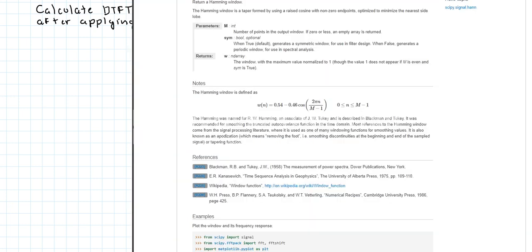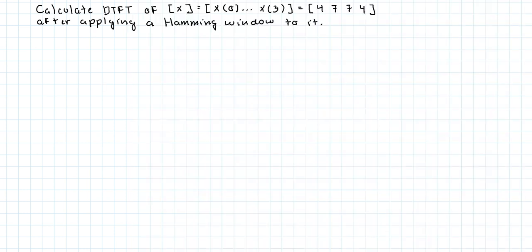Now, I found the Hamming window on this website, you probably have it in your own textbook, but 0.54 minus 0.46 cosine of 2πn divided by m minus 1. And m is the number of samples, in this case it's 4.